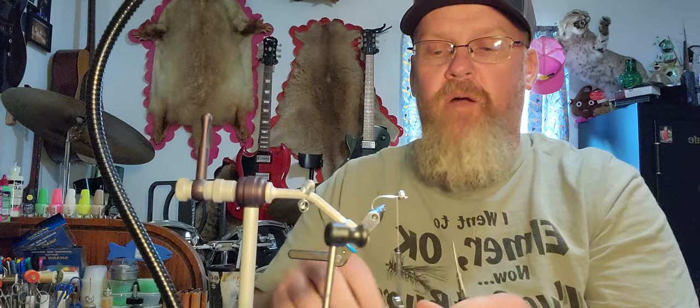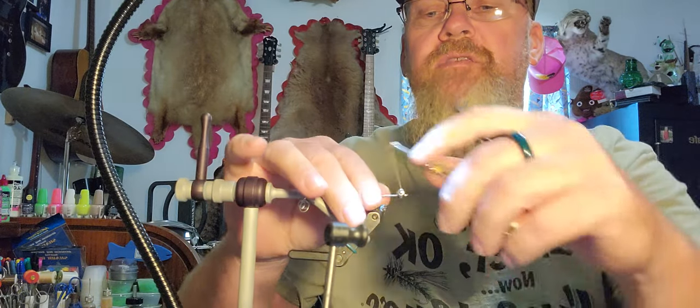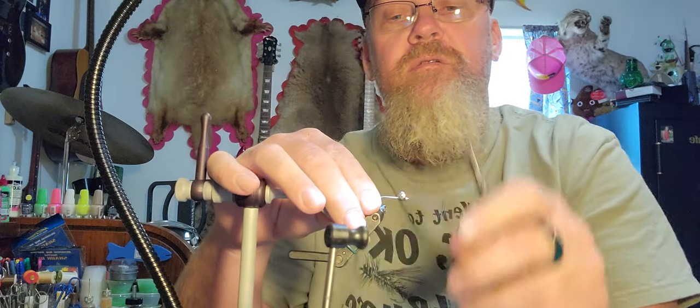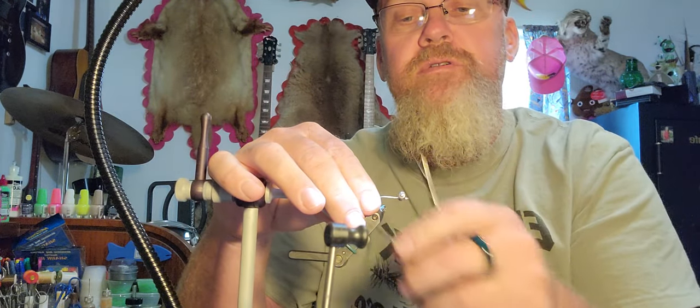Then what I always do, I'm going to take a little bitty drop of super glue and put it on that eye. I want this thing durable, especially on the saltwater version when I'm fishing in the salt. I want it to be more durable than the toothy creatures I'm going to be catching with it.